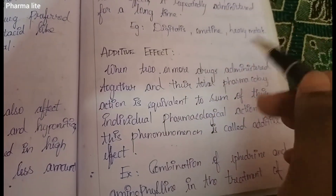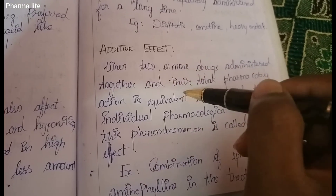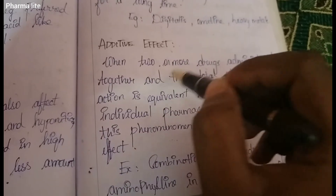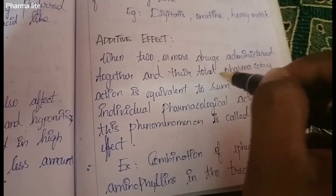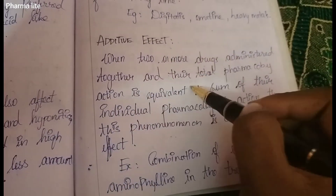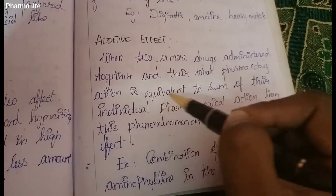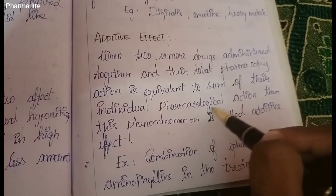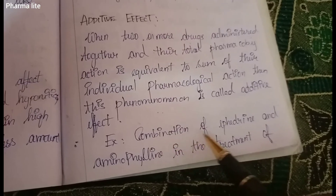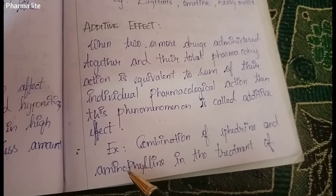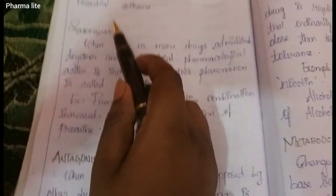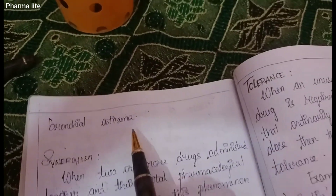Additive Effect. When two or more drugs are administered together, their total pharmacological action is equal to the sum of the individual pharmacological actions. This phenomenon is called the Additive Effect. For example, the combination of ephedrine and aminophylline in the treatment of bronchial asthma.